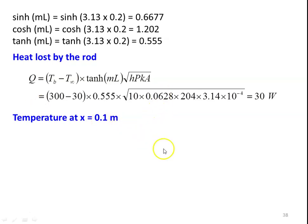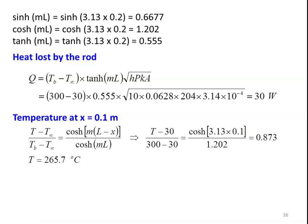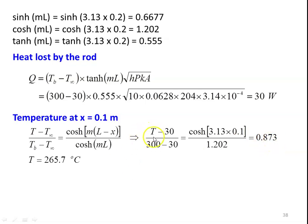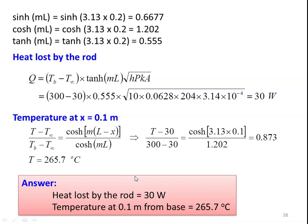The temperature at a distance x = 0.1 meter from the base uses the temperature distribution equation from the data book: (T − T∞)/(Tb − T∞) = cosh[M(L − x)] / cosh(ML). Substituting: (T − 30)/(300 − 30) = cosh[3.14 × (0.2 − 0.1)] / 1.202. The temperature ratio is 0.873, giving the temperature at x = 0.1 meter as 265.7 degree Celsius. So the heat loss by the rod is 30 watts and the temperature at 0.1 meter from the base is 265.7 degree Celsius.